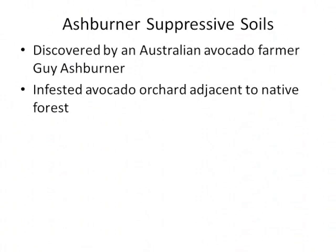We have this concept of the Ashburner suppressive soils. An Australian farmer, Guy Ashburner, had an infested avocado orchard with Phytophthora cinnamomi. Adjacent to his orchard was forest, and he noticed that even though there were susceptible hosts in the forest, his orchard looked terrible while the forest was still growing healthy. He wondered what it was about the forest soil that was not conducive to the pathogen, and like any good farmer, he decided to try mulch and calcium application — and he was successful, apparently recovering his orchard.